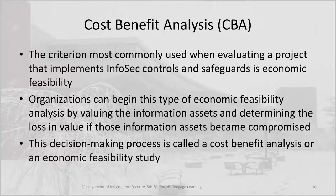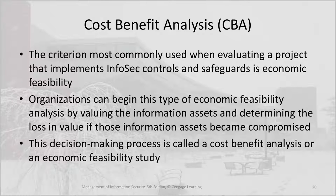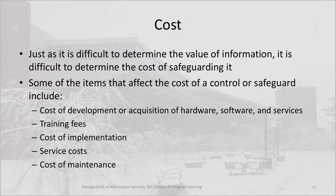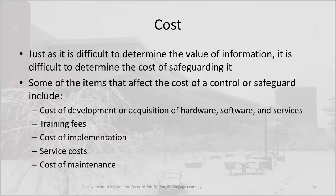The criterion most commonly used when evaluating a project that implements information security controls and safeguards is economic feasibility. Organizations can begin this type of analysis by valuing information assets and determining the loss in value if those assets become compromised. This decision-making process is called a cost-benefit analysis or an economic feasibility study. Some of the items that affect the cost of a control or safeguard include the cost of development or acquisition of hardware, software, and services, training fees, cost of implementation, service costs, and costs of maintenance.